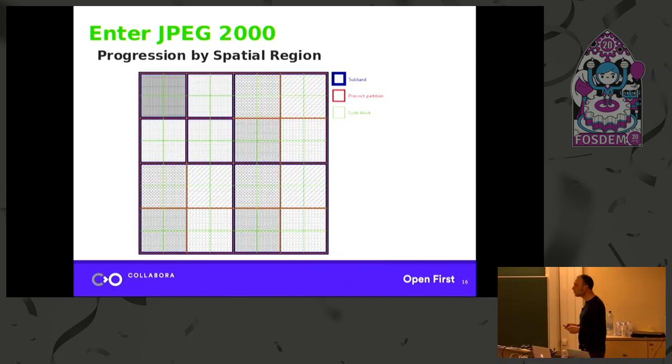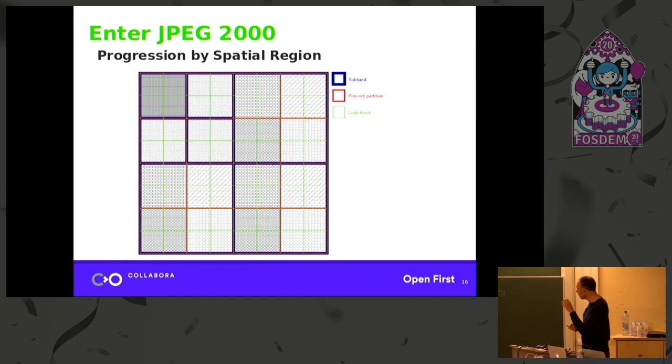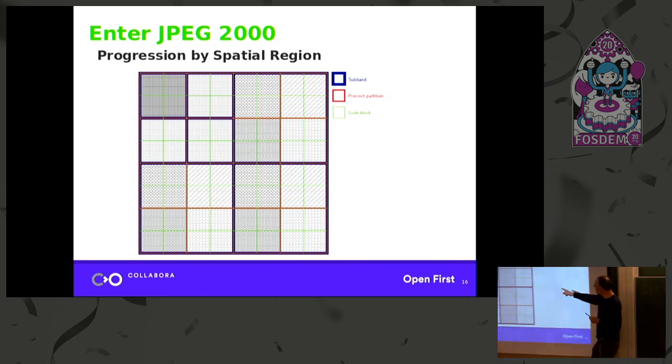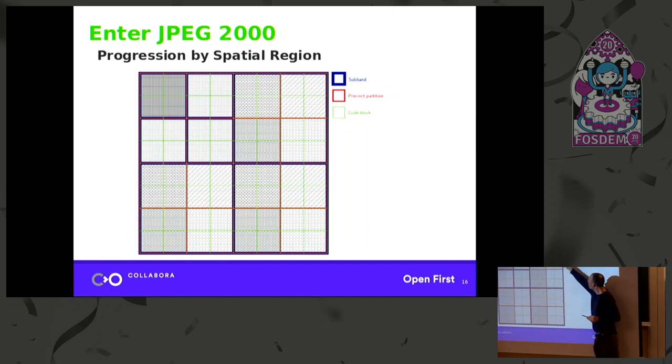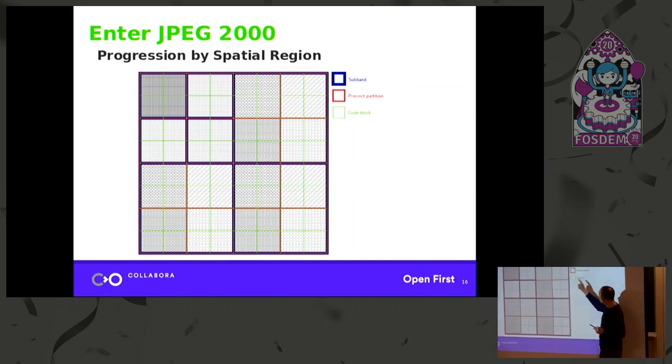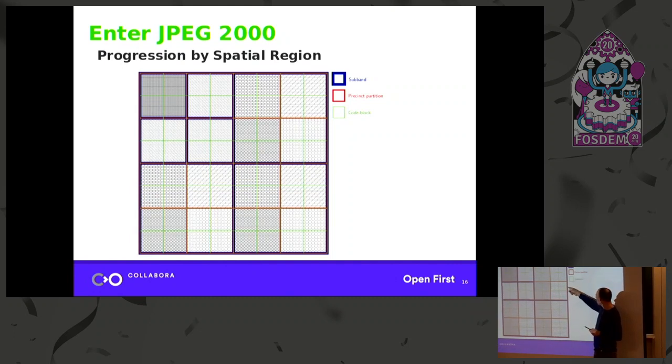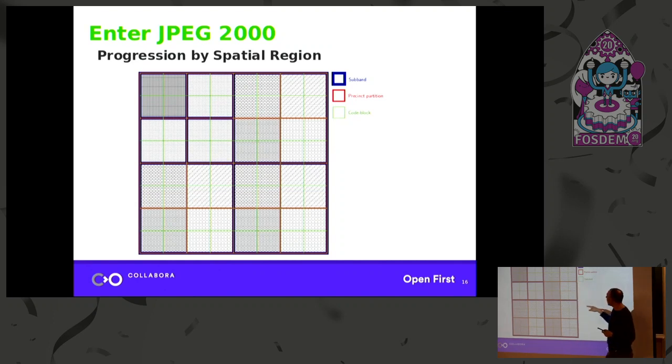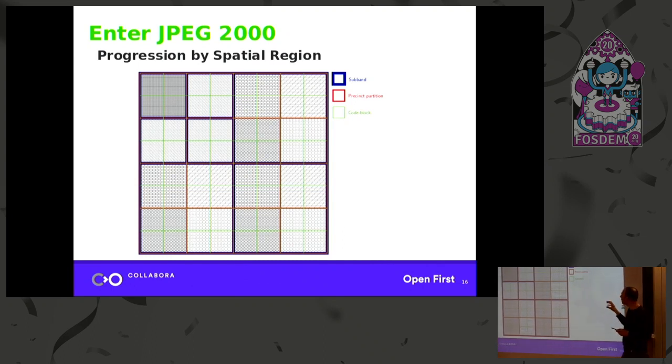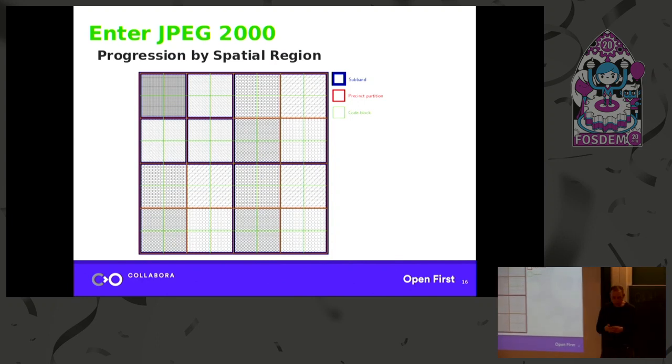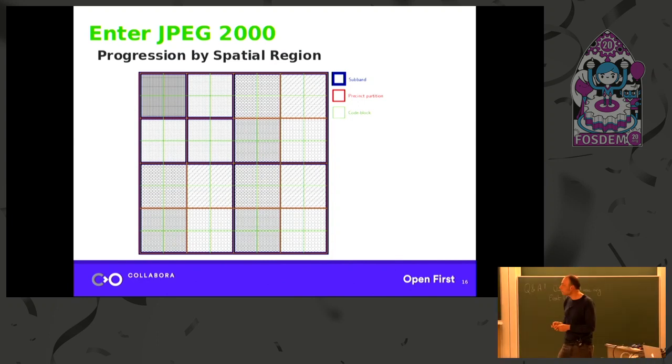There's also a progression by spatial region. You can see these are the original sub-bands that we had from the wavelet, these big blue boxes. And then inside we have the precincts, and inside the precincts we have the code blocks. And so you can actually encode by precinct and store the image progressing that way. And that's useful for, let's say you have a scanner, you're limited by memory, you might want to encode one precinct at a time and then move on. And it's also useful for random access into the image.